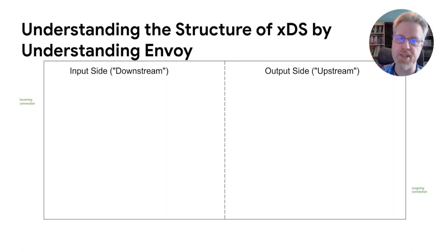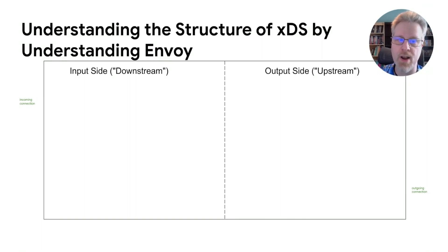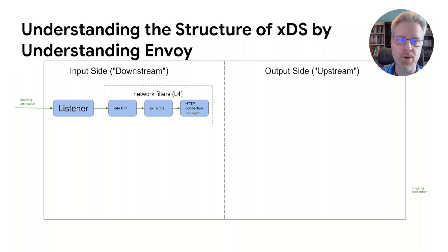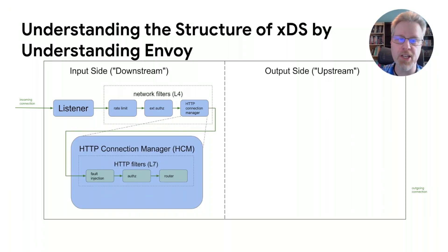Because XDS started out as an Envoy-specific set of APIs, the best way to understand the XDS data model is to understand at least a little bit about Envoy's architecture. Envoy is split into two sides: a downstream side that listens on a port and handles incoming traffic from clients, and an upstream side that handles outgoing traffic to remote servers. Traffic starts in a listener, which listens on a port for incoming IP traffic. The listener has a set of network filters for things like connection-level rate limiting or authorization. The final filter in the chain is the HTTP Connection Manager, or HCM, which deals with HTTP-level requests.